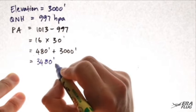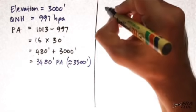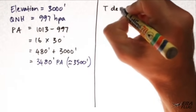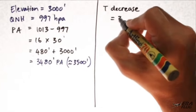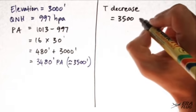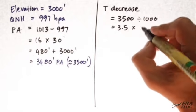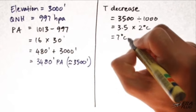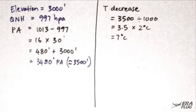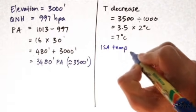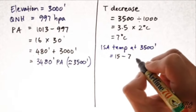For simplicity, we'll round that off to 3,500 feet. Next, we need to calculate the standard ISA temperature at 3,500 feet. For every 1,000 foot gain, the temperature drops 2 degrees C. So the temperature decrease with altitude will be 3,500 divided by 1,000, equals 3.5, times 2 degrees C, equals 7 degrees C. Therefore, the ISA temperature at 3,500 feet will be 15 degrees C minus 7, giving us 8 degrees C.